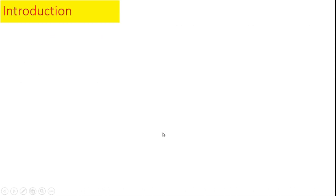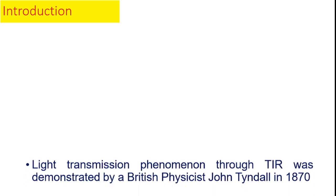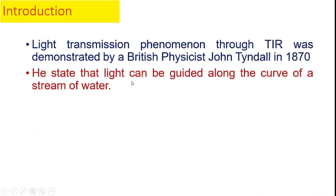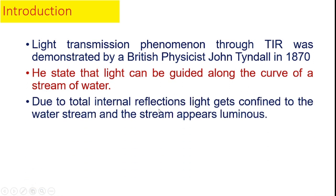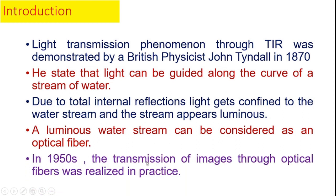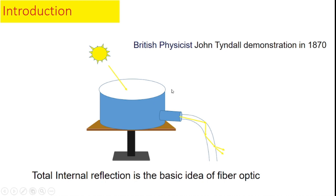Light transmission through total internal reflection was demonstrated by British physicist John Tyndall in 1870. He stated that light can be guided along the curve of a stream of water due to total internal reflection — light gets confined to the water stream and the stream appears luminous. A luminous water stream can be considered as an optical fiber. In the 1950s, the transmission of images through optical fiber was realized in practice.